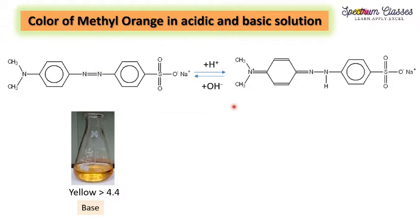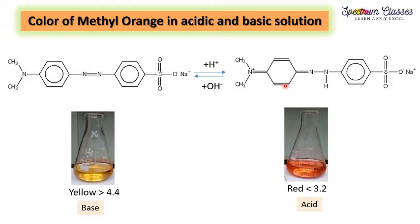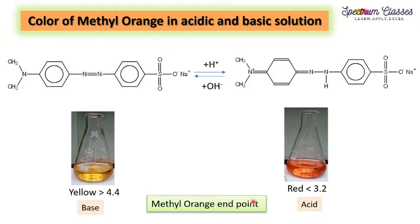In this way we have this structure in the acidic medium. By the formation of this new N-H bond, the structure of the rest of the compound is changed due to resonance. This gives an orange-red color in the acidic pH range, below pH 3.2. The color transformation from yellow to orange-red indicates the methyl orange endpoint, and its working pH range is 3.2 to 4.4.